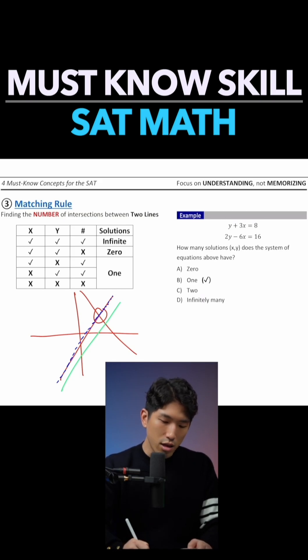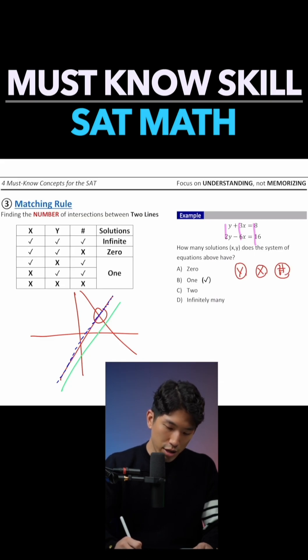You're simply going to look at the ratio of the coefficients. We're going to find the ratio of the y's, x's, and the numbers. So when it comes to y's, what's the ratio? It's one over two. What about the x? Three over minus six, and the number eight over sixteen.